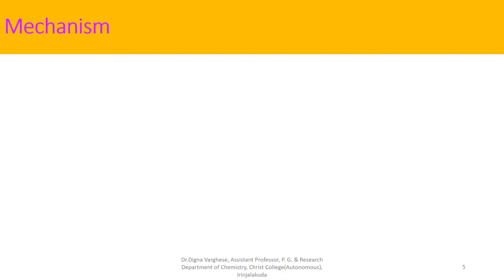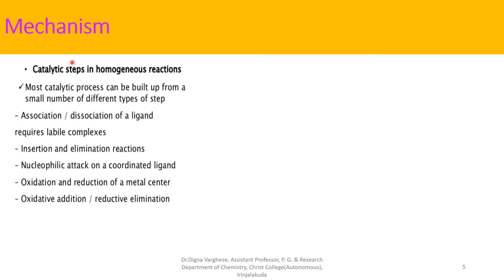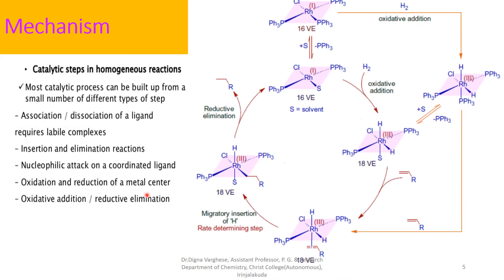Here we are going to discuss the mechanism of the hydrogenation reaction using Wilkinson catalyst. In a homogeneous reaction, there are certain catalytic steps. Most catalytic steps involve a small number of different types: association or dissociation of a ligand requiring labile complexes, insertion and elimination reactions, nucleophilic attack on a coordinated ligand, and oxidation and reduction of the metal center, or oxidative addition and reductive elimination.